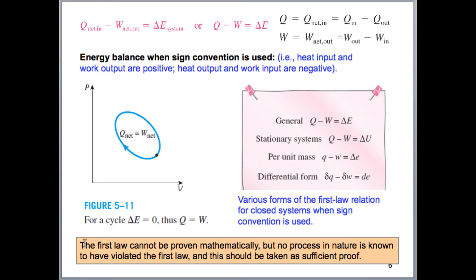Another important note is that the first law cannot be proven mathematically. We know that nothing has violated the first law, and it's difficult to prove it mathematically because it's its own conservation law. If we could derive the conservation of energy based on the conservation of mass or conservation of momentum, it would depend on those. It would not be its own conservation law. So that's one consideration we make when looking at the first law of thermodynamics. You should know that it hasn't been proven mathematically, but nothing has been known to violate it.